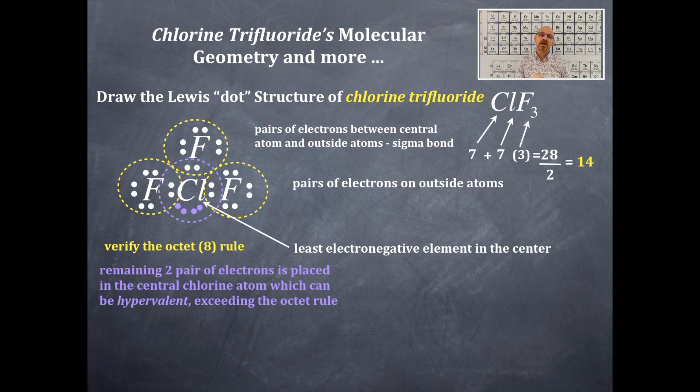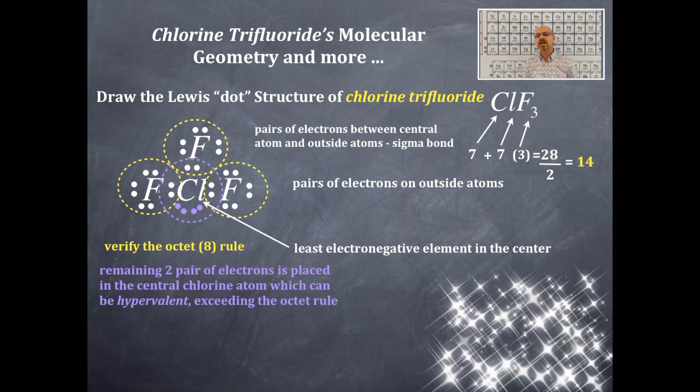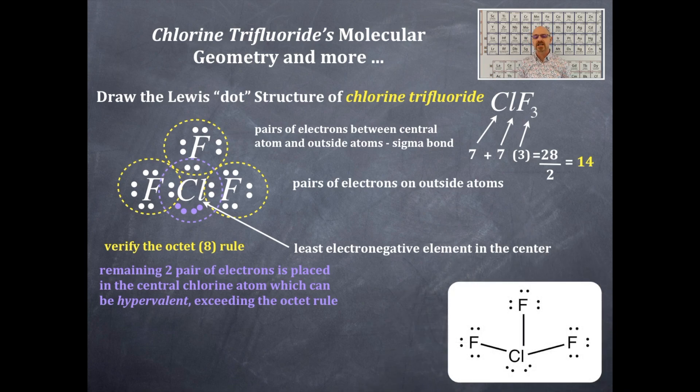I'm going to clean up this molecule here and make bonding pairs of electrons as lines and lone pairs as dots. Now I have this Lewis dot structure here. You see the central chlorine there and there are three singly bonded fluorines and two sets of lone pairs of electrons around the central chlorine.